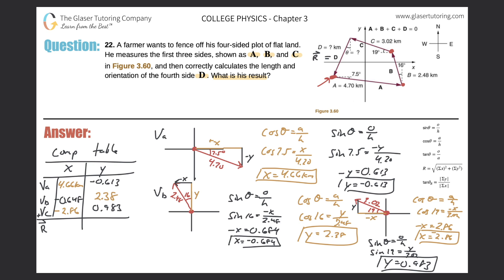Now I've got everything I need to find the components of my resultant vector. Let's add up all of those X's. So 4.66 minus 0.648 minus 2.86 comes out to be a positive 1.15 kilometers. Now let's do the same thing with my Y's. Negative 0.613 plus 2.38 plus 0.983 gives 2.75. So those are the X and Y components — the sum of all the X's and the sum of all the Y's.